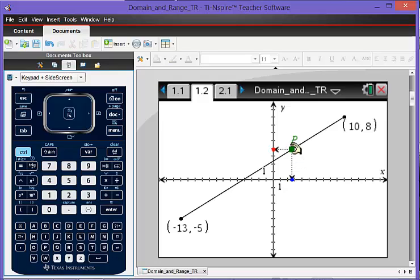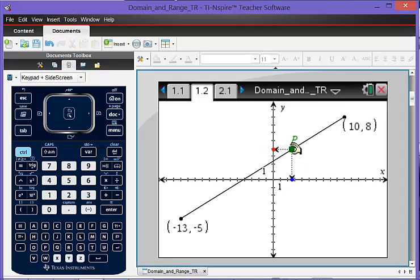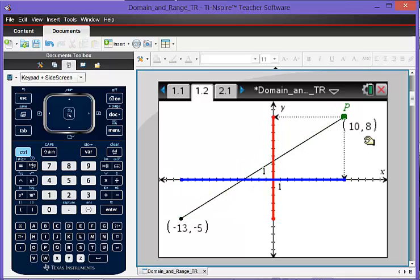So students are going to be asked to grab this point P and pull it along the graph. And as they do so, the domain is shown there in blue and the range is shown in red, so they can visualize that.